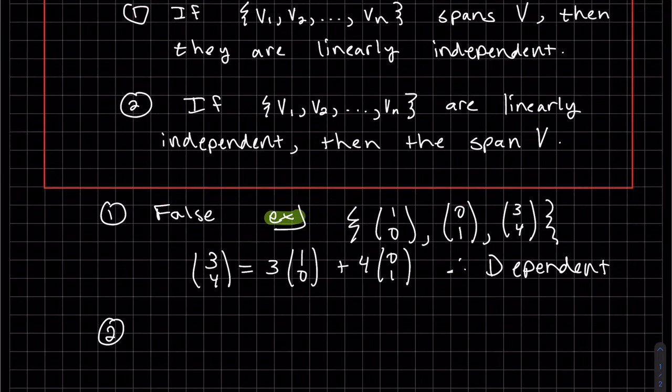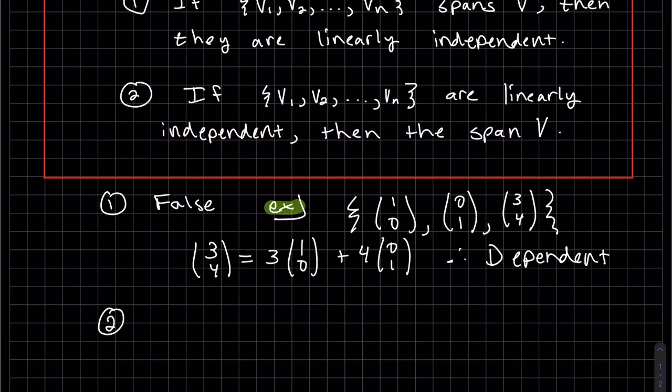Our second one, it's the other way around. If we have a set that are linearly independent, then do they span V? Is that true or false? Well, it's going to be false also.